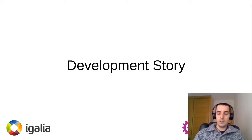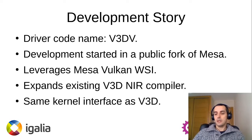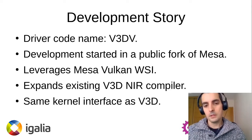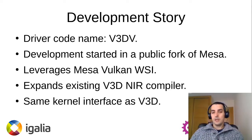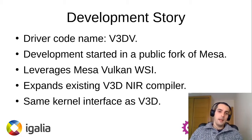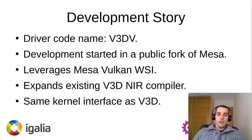The development story. We can say that we worked on the driver for one year, so it is basically a one-year summary of the development. The name of the driver — the code name — is B3DB, which is basically the same name as the OpenGL driver, with a V at the end for Vulkan. The development started using a public fork of MESA, and it reuses a lot of the utilities and code available on MESA.